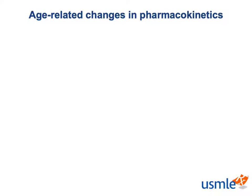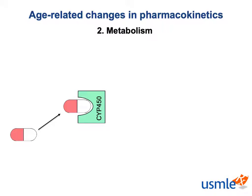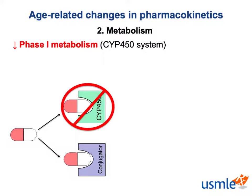In contrast, understanding the changes in metabolism that occur with aging can be very important for your future patients and your board exams. Orally administered drugs undergo two types of metabolism in the liver: Phase I and Phase II metabolism. Phase I metabolism is carried out by the hepatic CYP450 system, and this type of metabolism is impaired in elderly patients. Phase II metabolism refers to the conjugation reactions including glucuronidation, acetylation, sulfonation, and methylation.